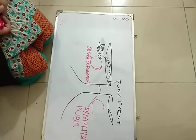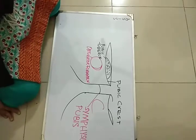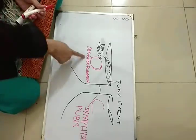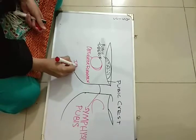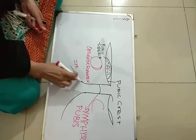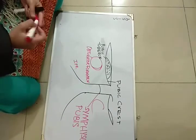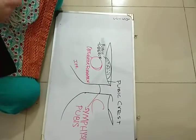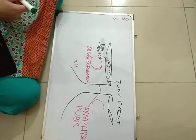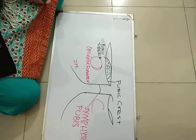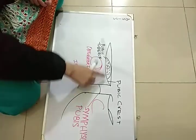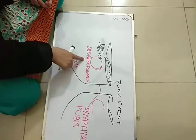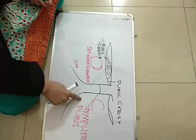In this diagram, we have the pubic crest, pubic tubercle, obturator foramen, and the ischiopubic ramus. This is the ischiopubic ramus and this is the symphysis pubis. The inguinal ligament extends from the anterior superior iliac spine till the pubic tubercle. This is the pubic tubercle, pubic crest, obturator foramen, ischiopubic ramus, and symphysis pubis.